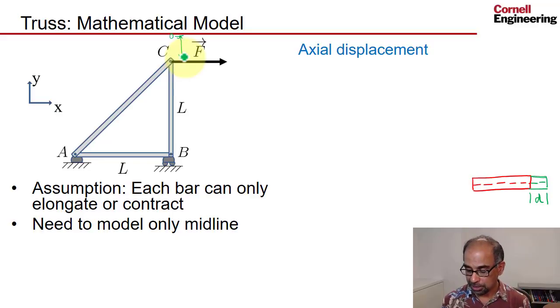Again I'm exaggerating the displacement for the sake of clarity. Now if this pin moves over here, it's also going to elongate this bar, and one has to take the component of that displacement in this direction to get that extension. It's a little bit more complicated.